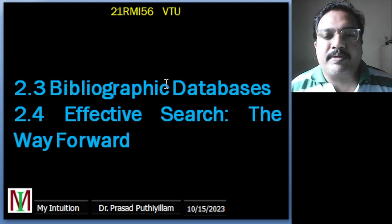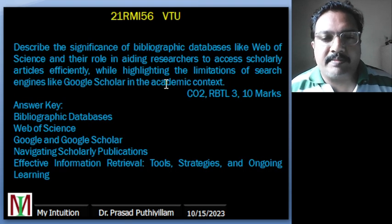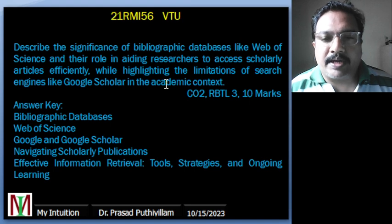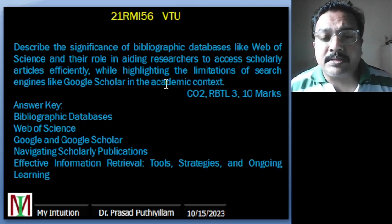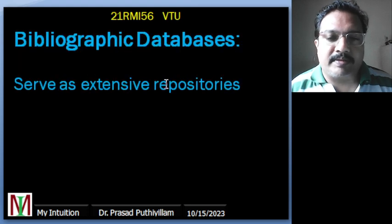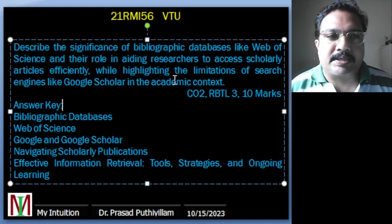Coming to points 2.3 and 2.4, the topic is bibliographic databases and effective search — the way forward, as given in the syllabus. The question framed is: describe the significance of bibliographic databases like Web of Science and their role in aiding researchers to access scholarly articles efficiently, while highlighting the limitations of search engines like Google Scholar in academic contexts. This is connected to CO2 with RBT level 3, for 10 marks.